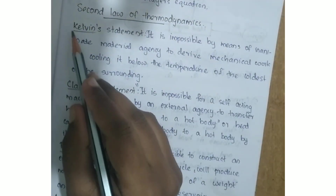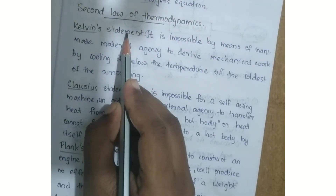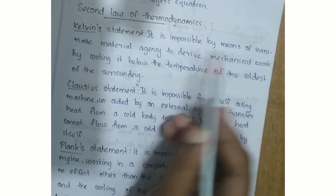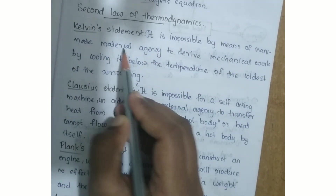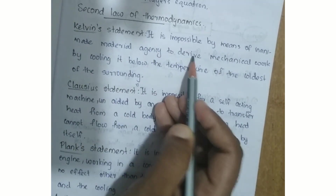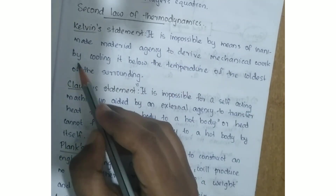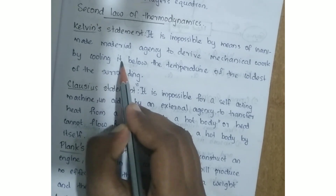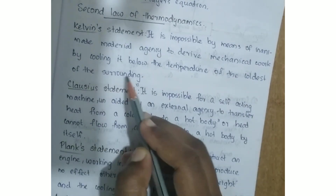This is the first Kelvin statement: it is impossible by means of inanimate material agency to derive mechanical work by cooling a body below the temperature of the coldest of the surroundings.